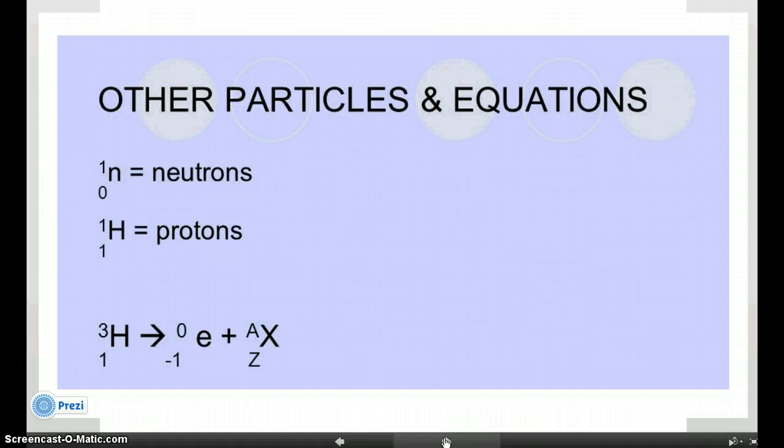There are some other types of particles that you might see in our nuclear equations. This first one is a neutron. Neutron is symbolized with the letter N. It has a mass of 1, but it has zero charge. The other symbol you might run into is this one. A single proton is just a hydrogen nucleus. So we use the hydrogen symbol. It has a mass of 1 and a charge of 1.